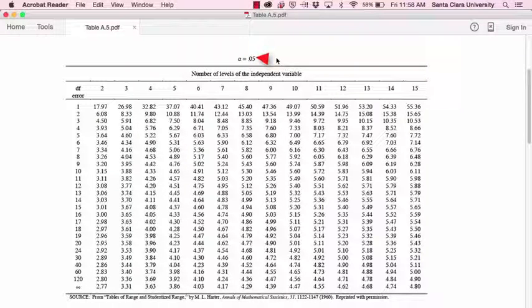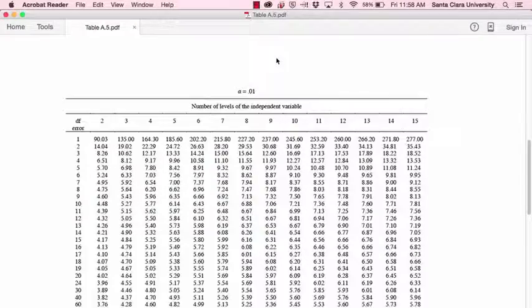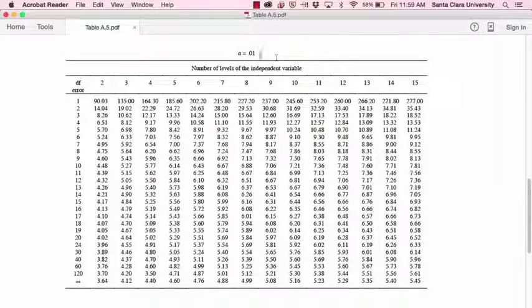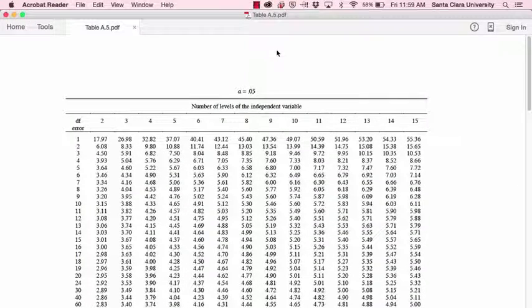and that means that these are the critical Tukey values when you have an alpha level of .05. If you scroll down, you'll see that there's another group of values that are associated with an alpha level of .01. For this lesson, we'll just focus on the alpha level of .05.